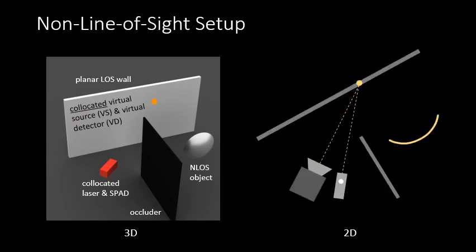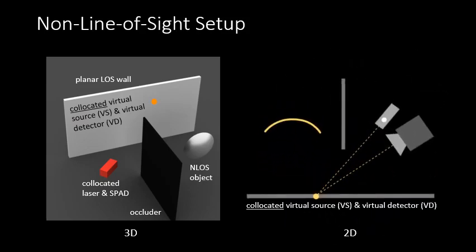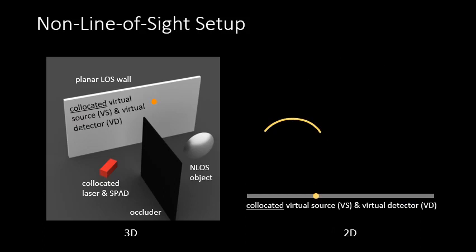In the rest of the presentation, we will be using a 2D visualization of this non-line-of-sight imaging scenario. Additionally, for convenience, we will flip our scene upside down. And finally, we will not be seeing the actual source and detector, acting as if the photons directly start and end in the virtual source and detector.